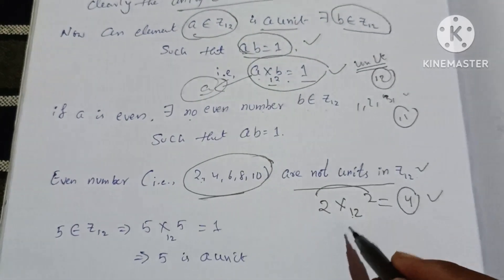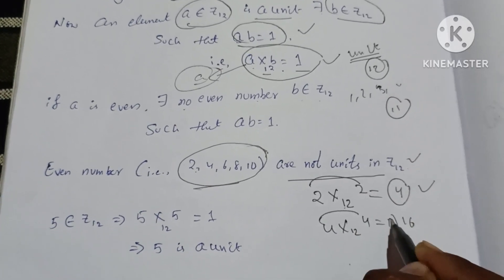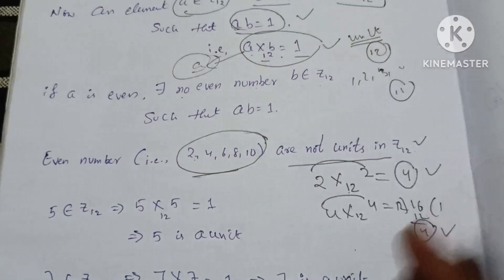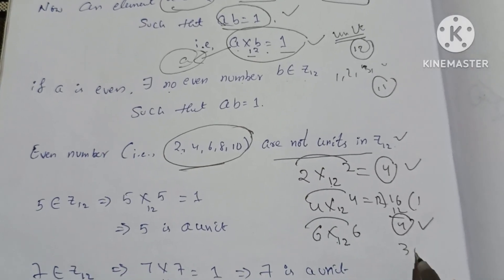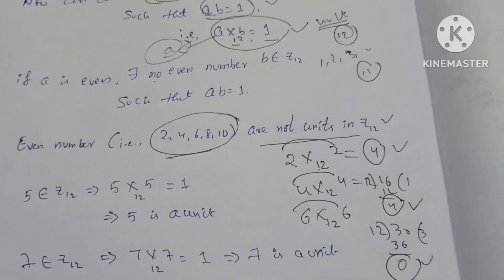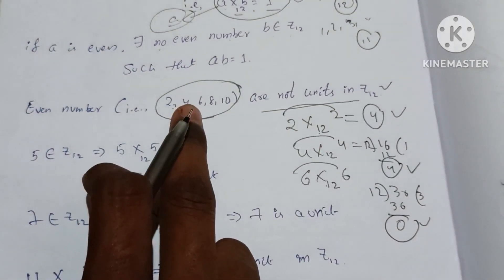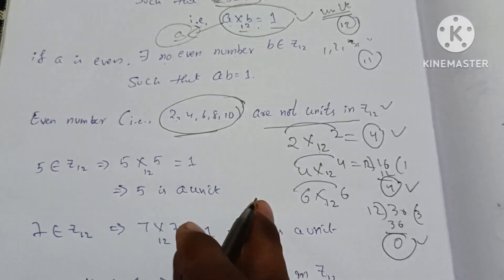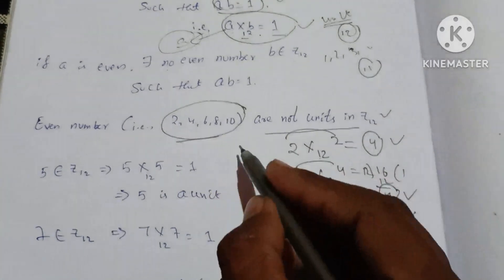Same way for 2: 2 is not a unit. For 4: 4×4 = 16, and 16 mod 12 = 4, so 4 is not a unit. For 6: 6×6 = 36, and 36 mod 12 = 0, so 6 is not a unit. For 8 and 10: similarly, they are not units.